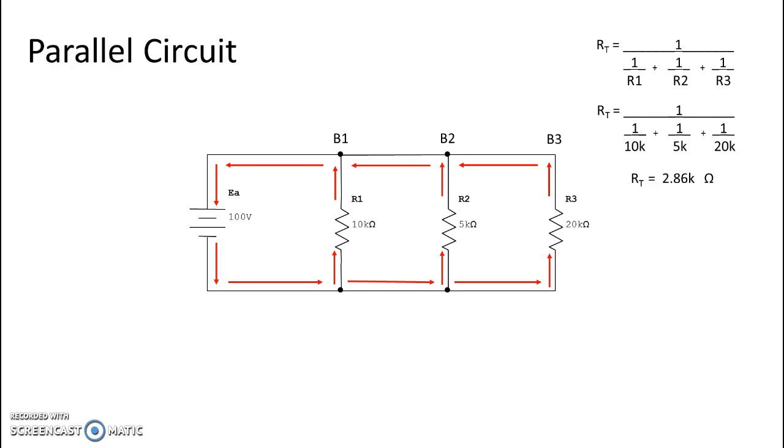So next we're going to look at how to figure out branch current. We're going to start with branch one. So in branch one, all we do is take voltage divided by the resistive value of branch one. In this case, it is 100 volts divided by 10k ohms, which gives us the total current for branch one of 10 milliamps.